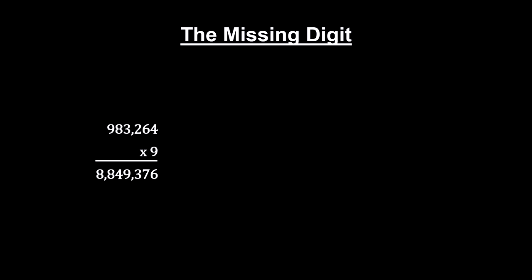Multiply 9 times any number, say 983,264. Pick one of the digits in the product. We'll pick the number 7.